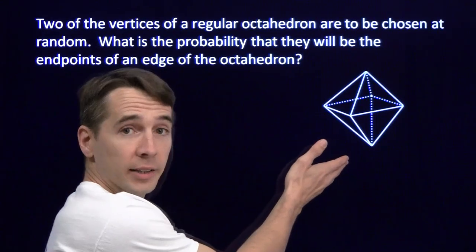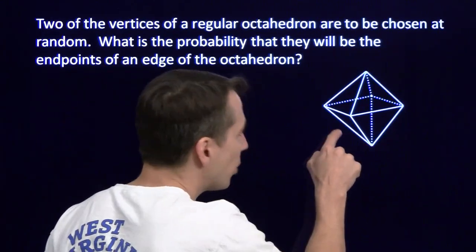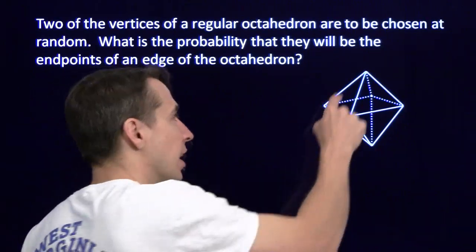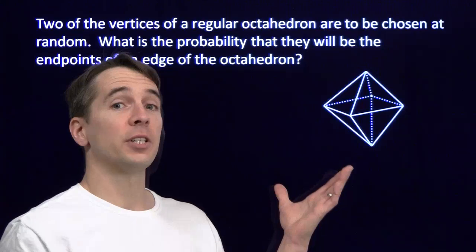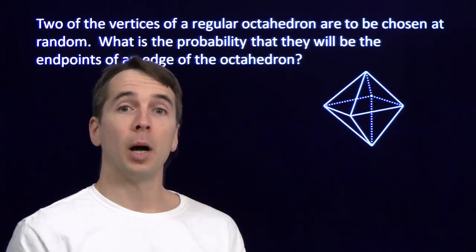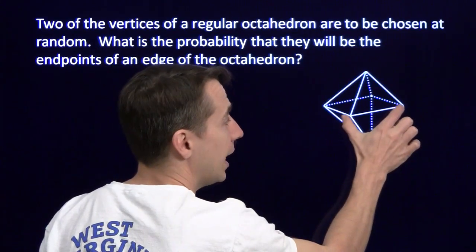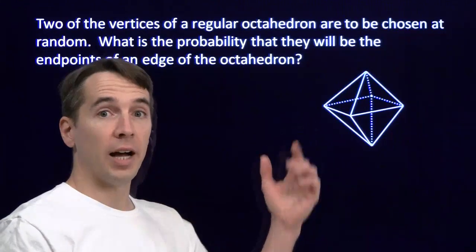For our first problem, we're going to start with an octahedron. You see the eight triangular faces there, we've got the six vertices, and we're going to choose two of those six vertices at random. We want the probability that those vertices are the endpoints of one of the edges of the octahedron.